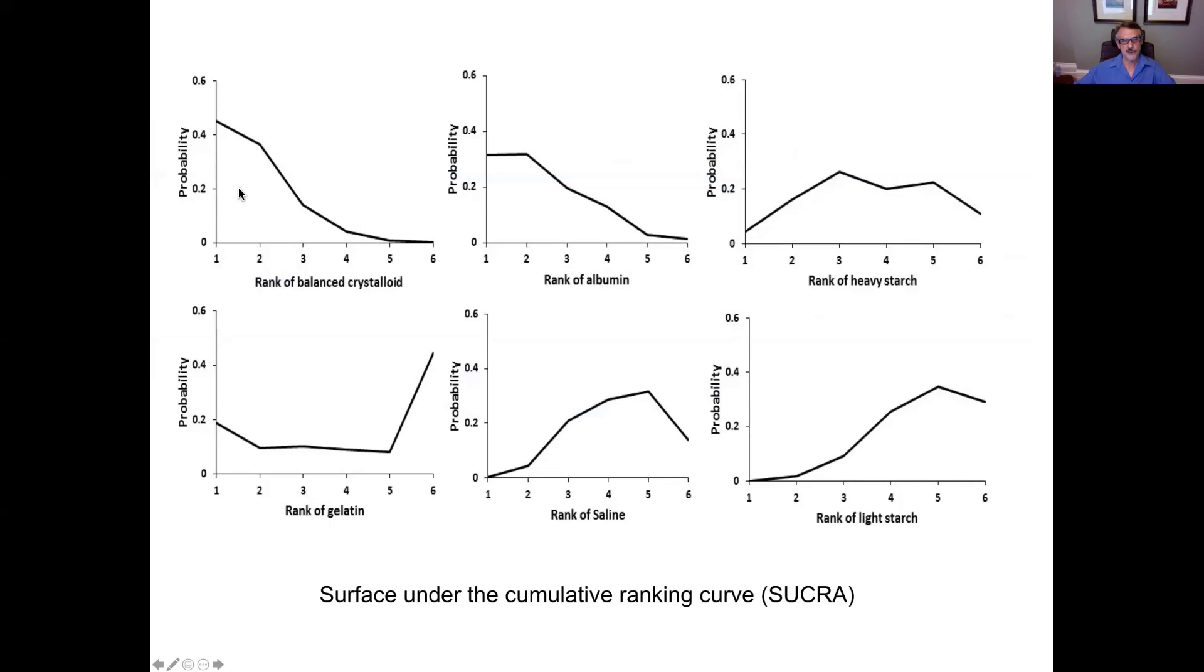One can construct a plot of the likelihood, let's start with the upper left-hand corner, balanced crystalloid. The likelihood that balanced crystalloid is the best, and it's over 40%. What's the likelihood it's second best? Well, between 30 and 40%. What's the likelihood that it's one of the worst? Very low. So, let's contrast that with gelatin, right underneath, where it's unlikely to be 1st, 2nd, 3rd, or 4th, or even 5th, and the most likely thing is it ranks 6th. So, you'd be much more inclined, on the basis of these rankings, to use balanced crystalloid than you would gelatin.